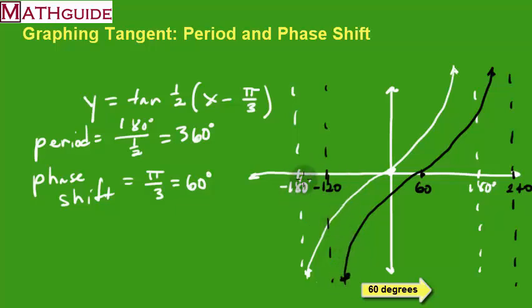So instead of going from negative 180 to positive 180, our new curve, which is in black now, is going from negative 120 to positive 240, and that's what we would call an interval of the curve, negative 120 to positive 240.